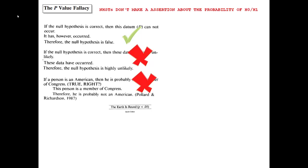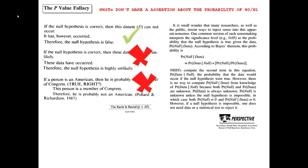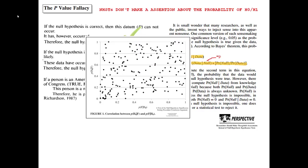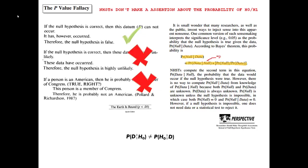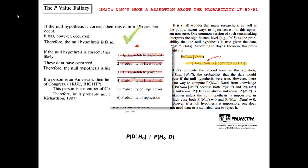According to Bayes' theorem, the probability of the hypothesis given the data and the probability of the data given the null hypothesis are not the same. With the p-value, we only know the probability of the data or more extreme values given the null hypothesis is true. To get from there to the probability of the null given the data, we would also need to know the prior probability of the null and the probability of the data. Unfortunately, there isn't even a correlation between these two probabilities. So we can say that the first four statements are false.